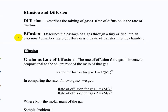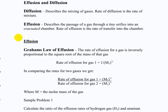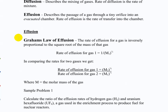A couple more terms: diffusion is the mixing of gases — two different gases released together will mix. Effusion describes the passage of a gas through a tiny orifice into an evacuated chamber. You have an empty chamber with a little hole, and gas rushes in. The reason effusion is important is that it allows you to separate things by molar mass. You can talk about how quickly a gas rushes in based on its molar mass.